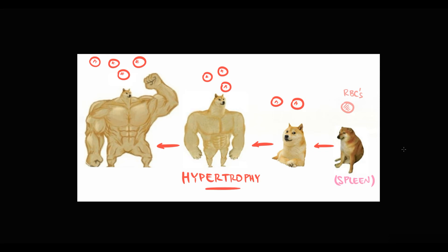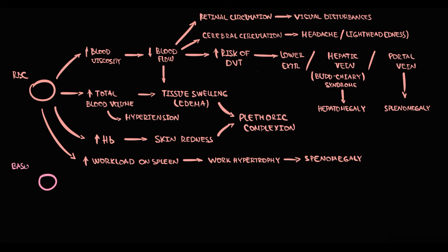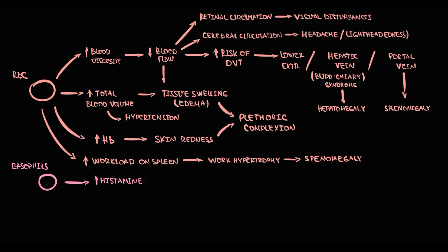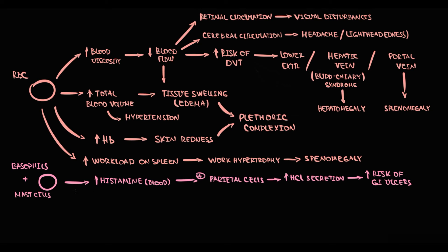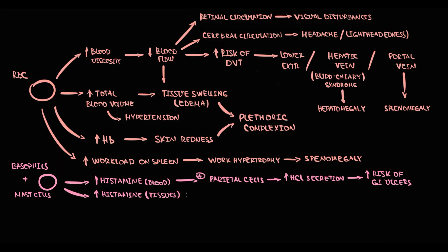Another type of cell that increases in polycythemia is basophils. Basophils contain a lot of histamine, and the mutation makes basophils hyperreactive, so they begin to release more histamine into the blood. Histamine stimulates parietal cells to release hydrochloric acid, and increasing secretion of hydrochloric acid greatly increases the risk of gastrointestinal ulcers. Also, with increasing basophils, the amount of mast cells in tissue increases — increasing basophils in the blood is associated with increasing mast cells in the tissues.